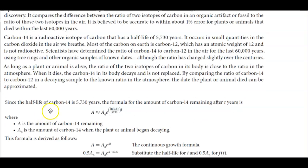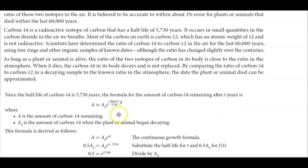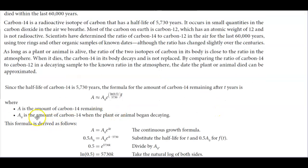Since the half-life of carbon-14 is 5,730 years, the formula for the amount of carbon-14 remaining after t years is the following: A is the amount of carbon-14 remaining, and A₀ is the amount of carbon-14 when the plant or animal began decaying.